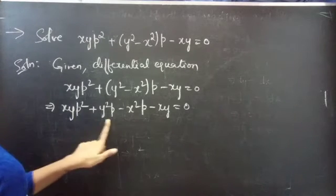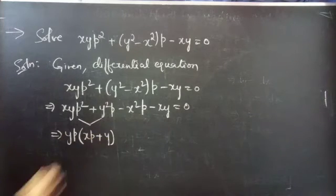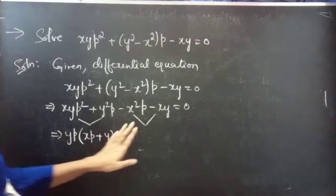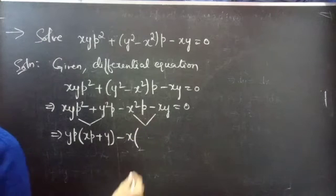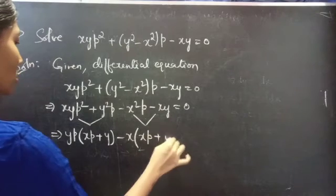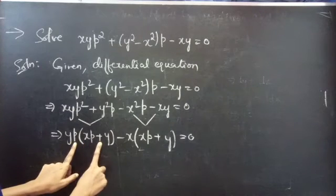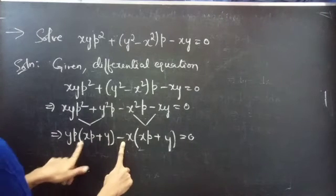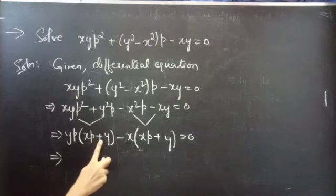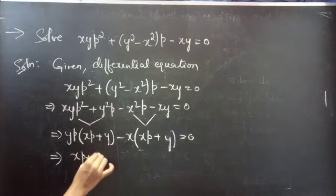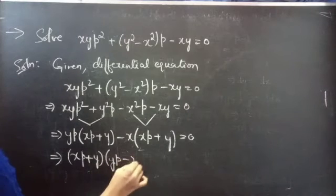Now take y·p common from the first two terms to get y·p·(x·p + y). Then take minus x common from the next two terms to get minus x·(x·p + y) = 0. Since (x·p + y) is common in both terms, take it common to get (x·p + y)·(y·p - x) = 0.